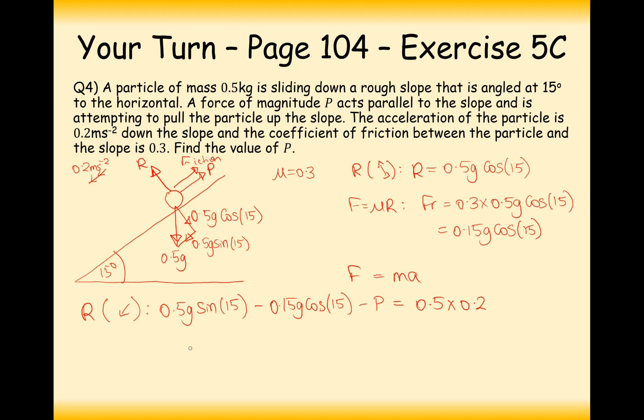What we can do then is we can rearrange this equation a little bit. We're going to have 0.5 g sin 15, minus 0.15 g cos 15, take away 0.1. And that's going to give me the value for P. I've just swapped around those last two terms there. And then all that's left for me to do is to plug all of this into the calculator. And it's minus 0.15 times 9.8 times cos 15, minus 0.1. And my value for P comes out to be 4.2 newtons that's attempting to pull the particle up the slope.